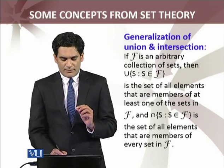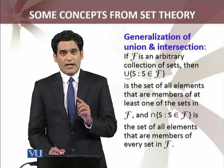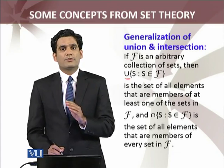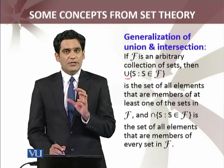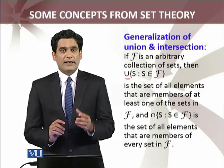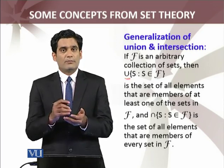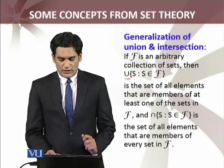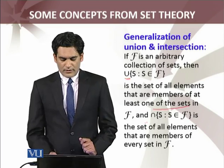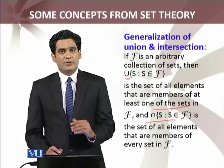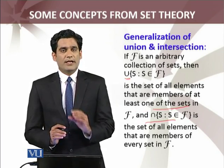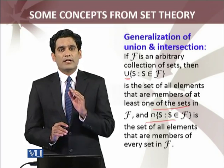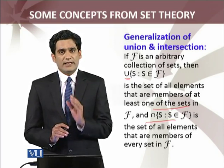इतने sets भी हो सकते हैं जो countable हो ही ना. इसलिए union of arbitrary collection of sets जब मैं define कर रहा हूँ, मैंने k=1 to n या k=1 to infinity नहीं लिखा, because यह collection F uncountable sets भी हो सकती है — जिनको count करना शुरू करें तो count ना किये जा सकें. Union is the set of all elements that are members of at least one of the sets. Similarly intersection of an arbitrary collection F of sets — उसमें वो members होंगे जो उस arbitrary collection के हर set के member होंगे.